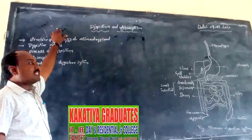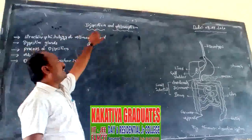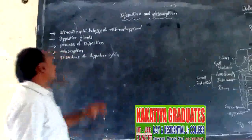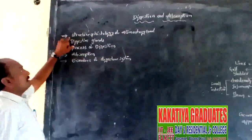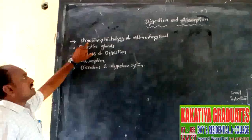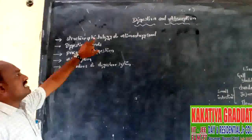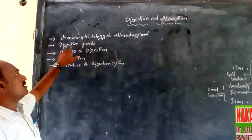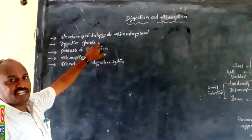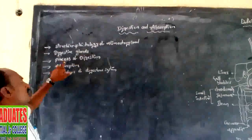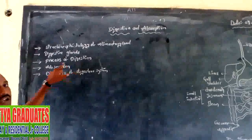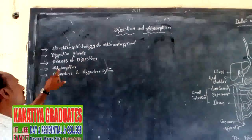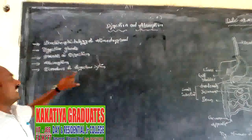The first topic is about digestion and absorption. The sub-topics explained here are: structure and histology of the alimentary canal, digestive glands and their functions and secretions, process of digestion and absorption and assimilation, and disorders of the digestive system.